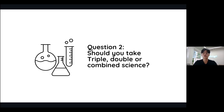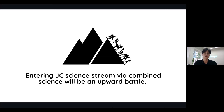The next question is usually whether to take triple science, double science, or combined science. My general advice is that it really depends on your next step after O-levels. If you're planning to go to the JC science stream, you should most definitely go for either double or triple science. Technically, it is possible to enter JC science stream via combined science, but it will be an uphill battle. There will be a bridging course for combined science students to catch up at the start of JC, but to expect to learn two years' worth of content in a matter of weeks is really asking for a lot. So if you already have an eye out for JC and know you're likely to enter the science stream, you should invest your time to excel at O-levels so that you have an easier time with a stronger foundation in JC.